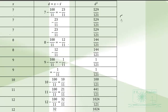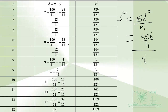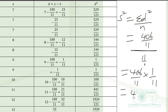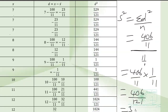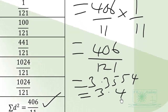The variance equals the sum of squared deviations divided by n: (406/11) ÷ 11 = 406/11 × 1/11 = 406/121, which equals 3.3554. Therefore, to one decimal place, the variance is 3.4.